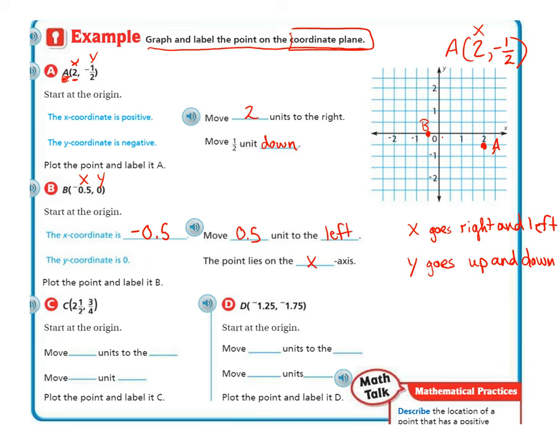Let's do point C now. C is at 2.5, and then that's the x-axis and the y-axis. So start at the origin. Move 2.5 units to the right because it's positive. So 2.5, 1, 2.5 to the right. And then move 3/4 of a unit up because it's positive. So 2.5 and then 3/4 is going to be not quite to 1, just a little bit below 1. And that's going to be our point C.